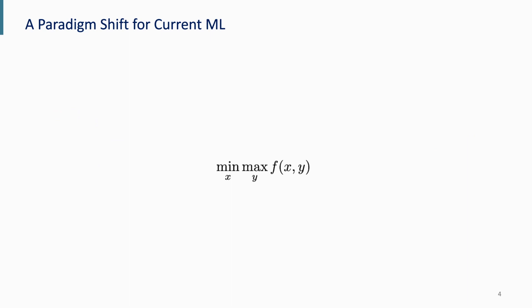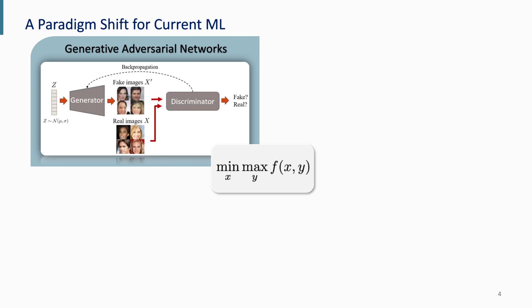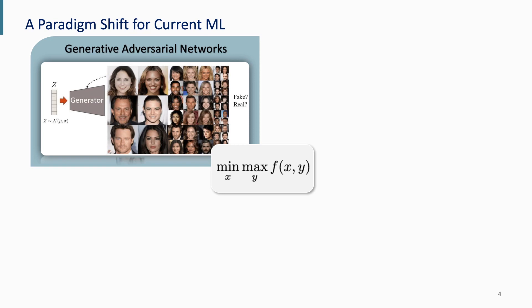There are lots of applications with min-max optimization, and it has been a key driving force behind many major fields in reinforcement learning and machine learning. One of the most prominent examples is generative adversarial networks, where we train two agents — one for the generator and one for the discriminator simultaneously. The generator tries to generate fake images to fool the discriminator, and the discriminator tries to distinguish fake images from real ones. This can be naturally formulated as a min-max optimization and has led to a lot of success in image synthesis, text generation, and imitation learning.